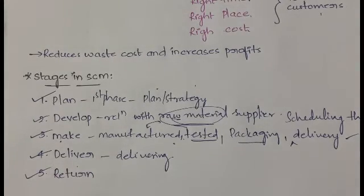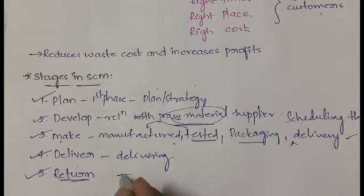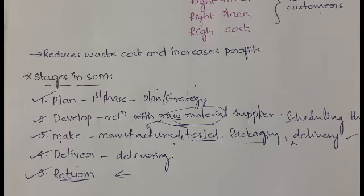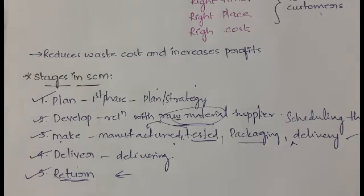The fifth stage is Return. Once you deliver the product, the customer may not like it, may find a cheaper option, or may have received a damaged product. So there is a chance the customer will return the product. In this phase, customer support is involved — 24/7 support teams try to retain the customer, and if there is a real damage or defect, they check and confirm it.